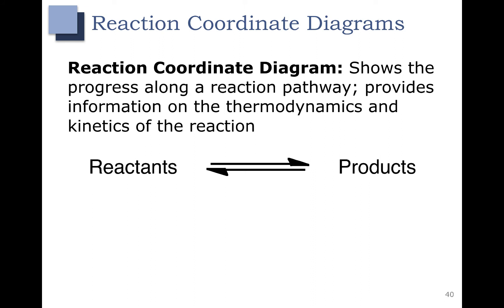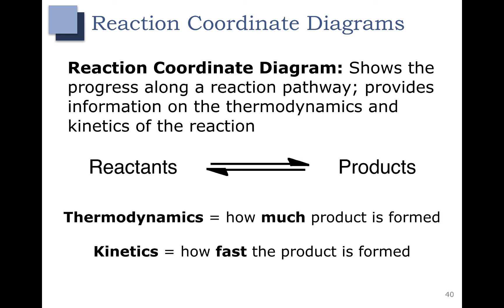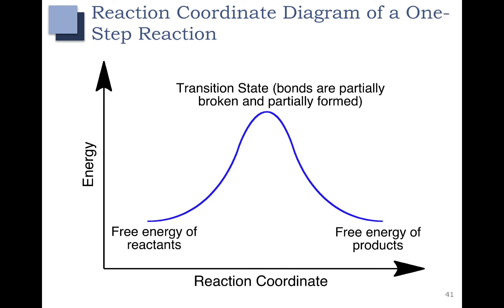Now let's apply what we've learned about energy to reaction coordinate diagrams. Reaction coordinate diagrams show us the progress along a reaction pathway. They give us information about both the thermodynamics of the reaction and the kinetics of the reaction. The reactants are going to be on the left and the products on the right. In organic chemistry, when we talk about thermodynamics, we just want to know how much product is formed, and when we talk about kinetics, we just want to know how fast the product is formed.